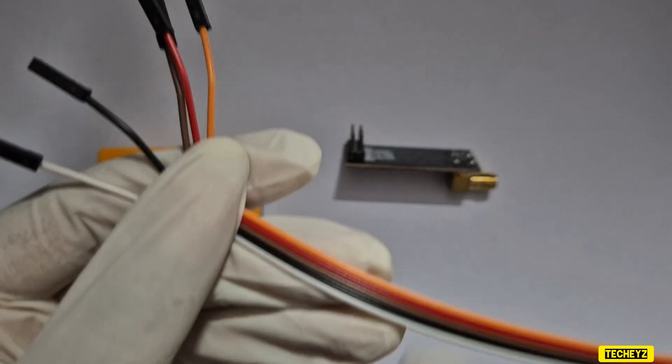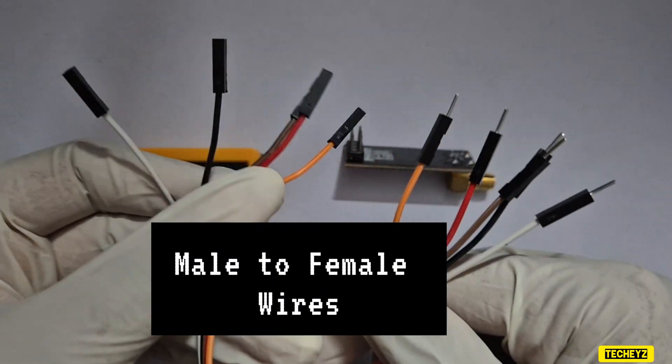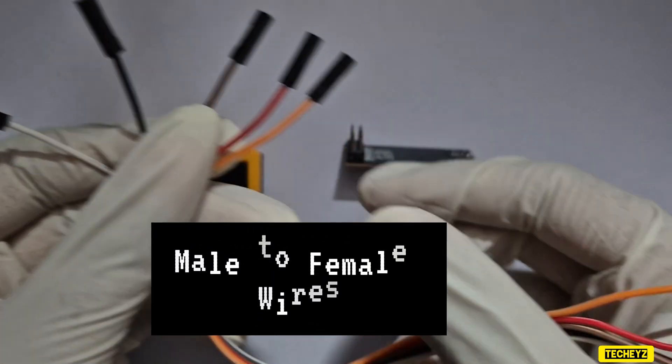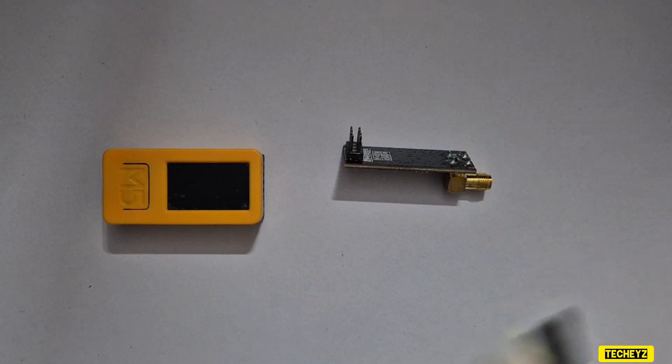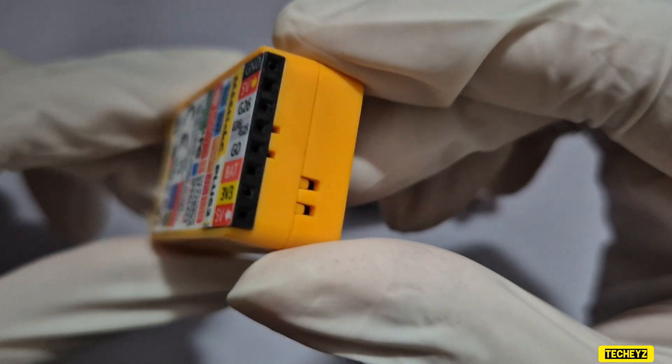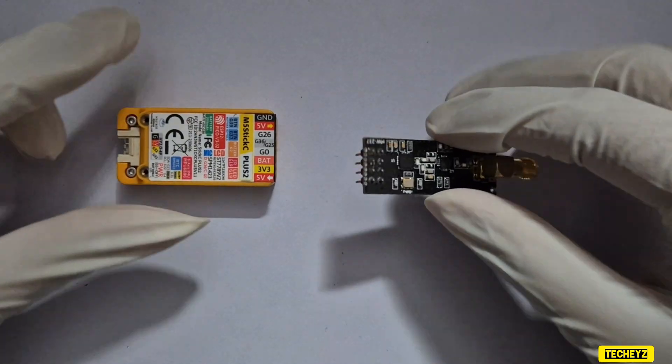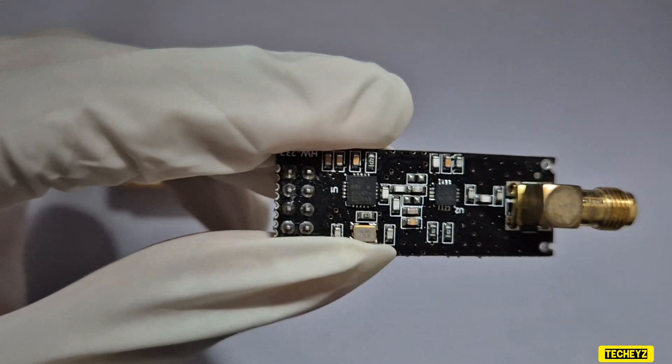For my circuit connection, I will be using 5 jumper wires which will be male to female. As you can see I have 5 wires with different colors. Along with that we need 2 wires from female to female. Once we have everything in place, I will start connecting the jumper wires from my NRF module to the M5 Stick module.